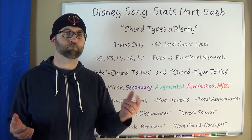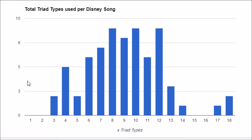Alright, computer time — let's hop in. First up, here's a graph showing the total triad types used per Disney song. And like I said four videos ago, Disney songs use a plethora of chord triad types. Look at this: three-to-five chord songs are actually less common than six, seven, eight, nine, ten, eleven, and twelve chord songs, with the highest number of songs using eight, ten, and twelve chord triad types. When you're used to operating within the world of pop music, this is just nuts.